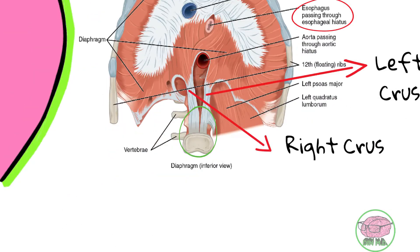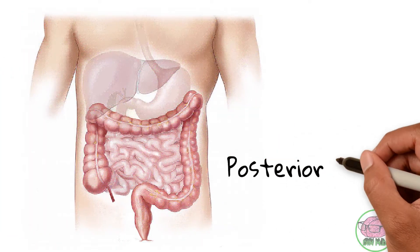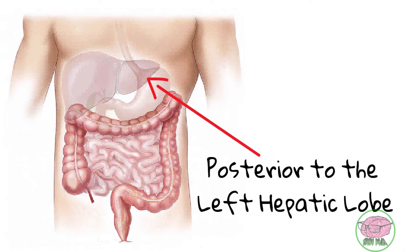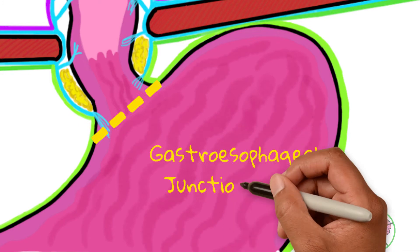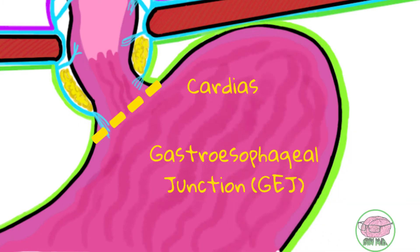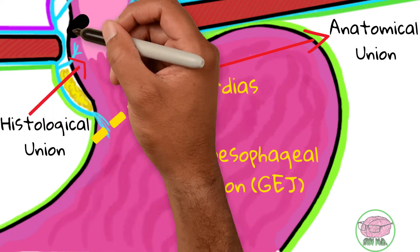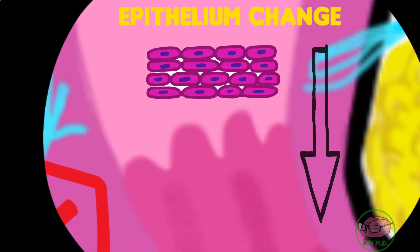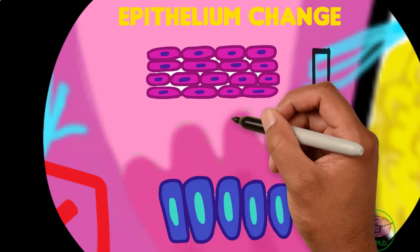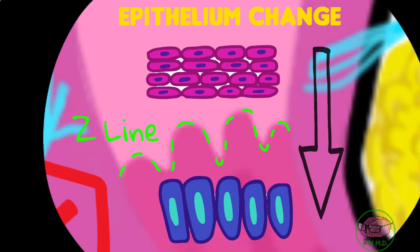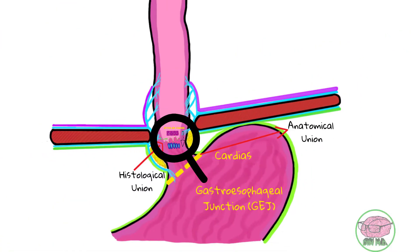When the esophagus enters the abdomen, it is located behind the left lobe of the liver and then joins with the stomach at a union known as the gastroesophageal union, also known as the cardias or cardiac orifice. However, this is only the anatomical union and it can be different from the histological one. What I mean by histological union is the part where the epithelium from the esophagus changes into the gastric epithelium. This is known as the Z line and can often be located above the gastroesophageal junction.